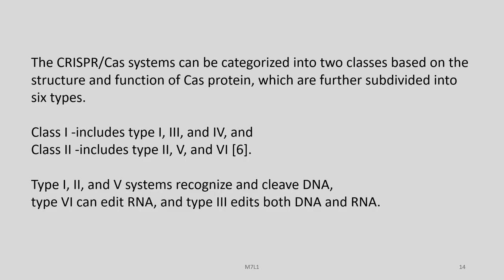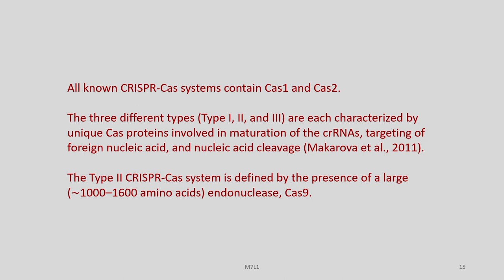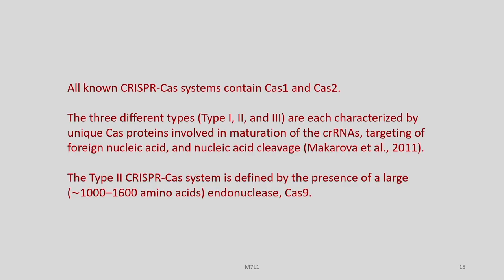The CRISPR-Cas system can be categorized into two classes based on the structure and function of Cas proteins, which are further subdivided into 6 types. Class 1 includes types 1, 3, and 4; class 2 includes types 2, 5, and 6. Types 1, 2, and 5 recognize and cleave DNA; type 4 can edit RNA and type 3 edits both RNA and DNA. All known CRISPR-Cas systems contain Cas1 and Cas2. Types 1, 2, and 3 are each characterized by unique Cas proteins involved in maturation of CRISPR-RNAs, targeting of foreign nucleic acid, and nucleic acid cleavage.